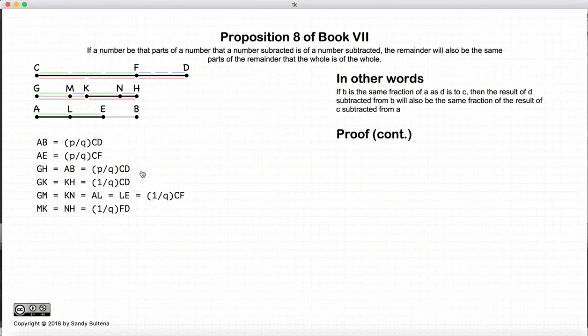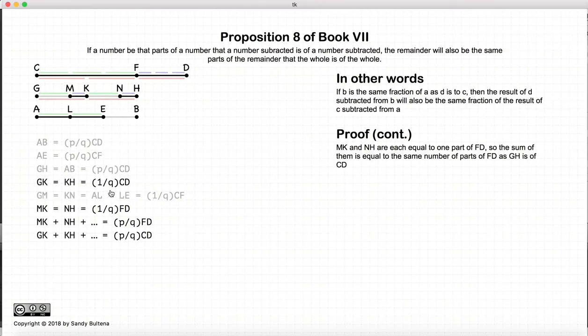This proof is rather long, so we have to continue on to another page. I have simply rewritten everything that we have demonstrated so far. There's nothing new here, it's just rewritten and got rid of some of the extraneous information. So carrying on, we have that GK and KH are both equal, and they're equal to one part of CD. MK and NH are equal, and they're equal to one part of FD.